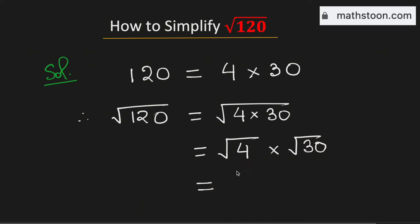As we know that square root of 4 is 2, this is now equal to 2 square root of 30.